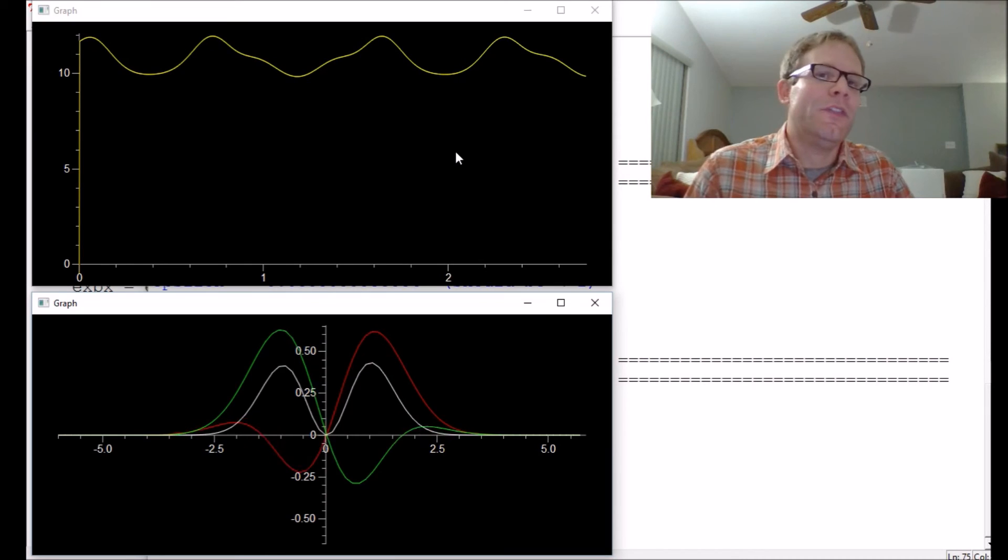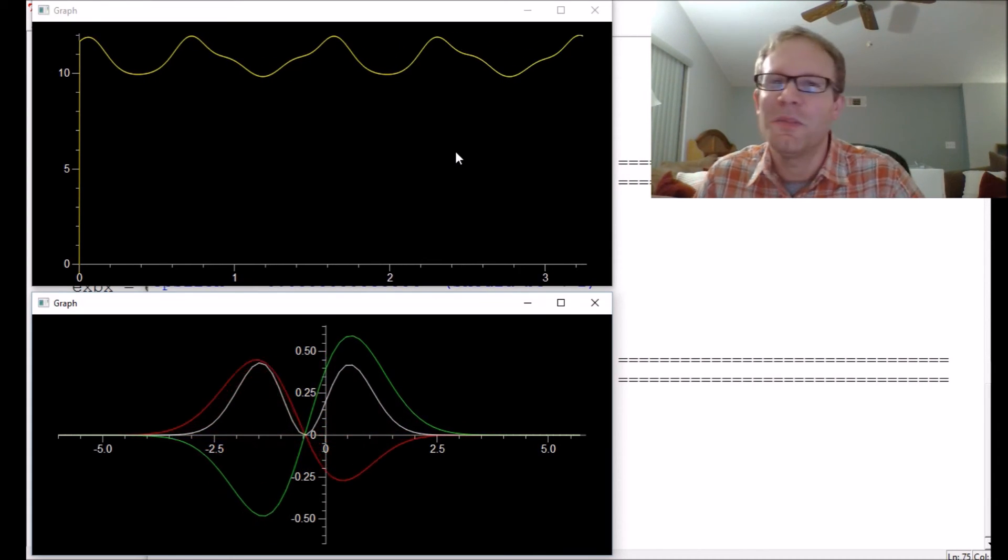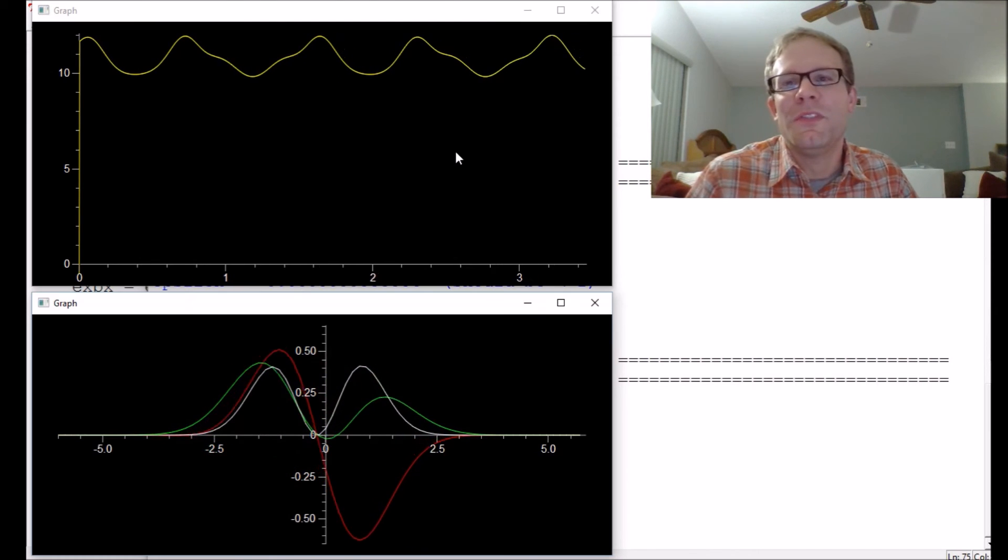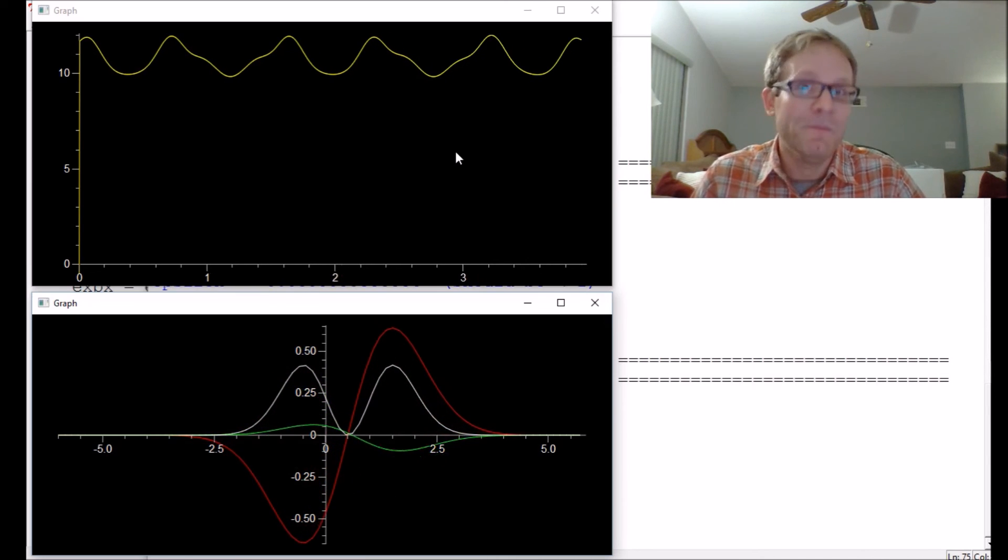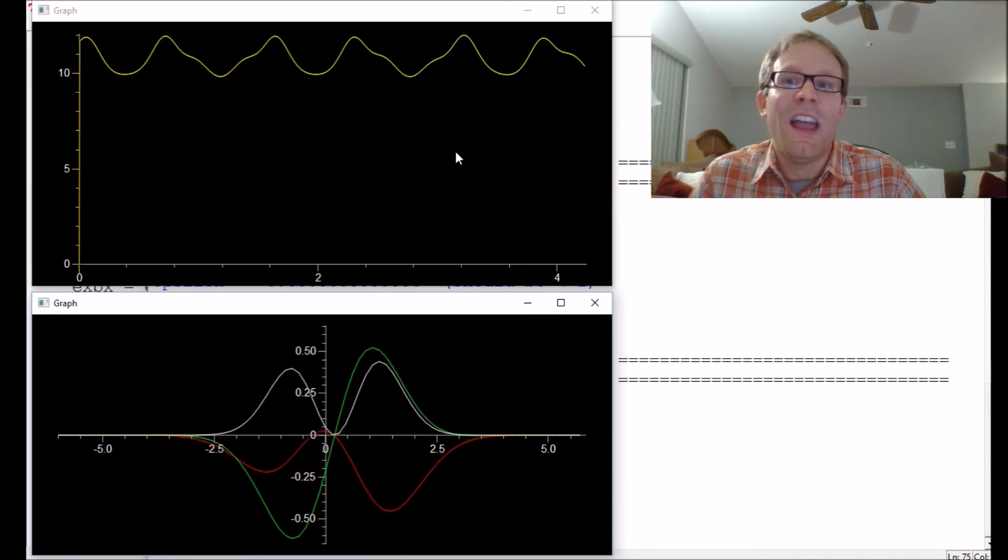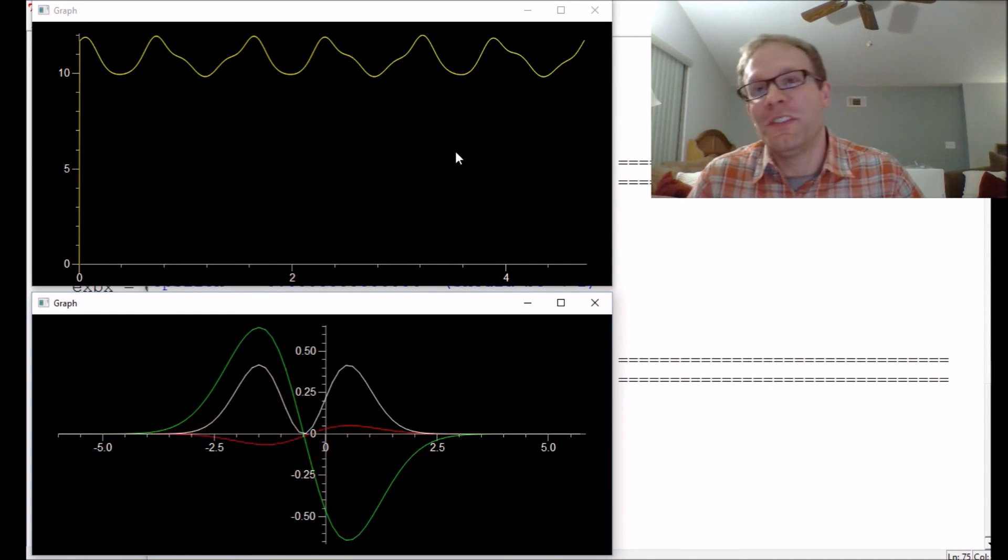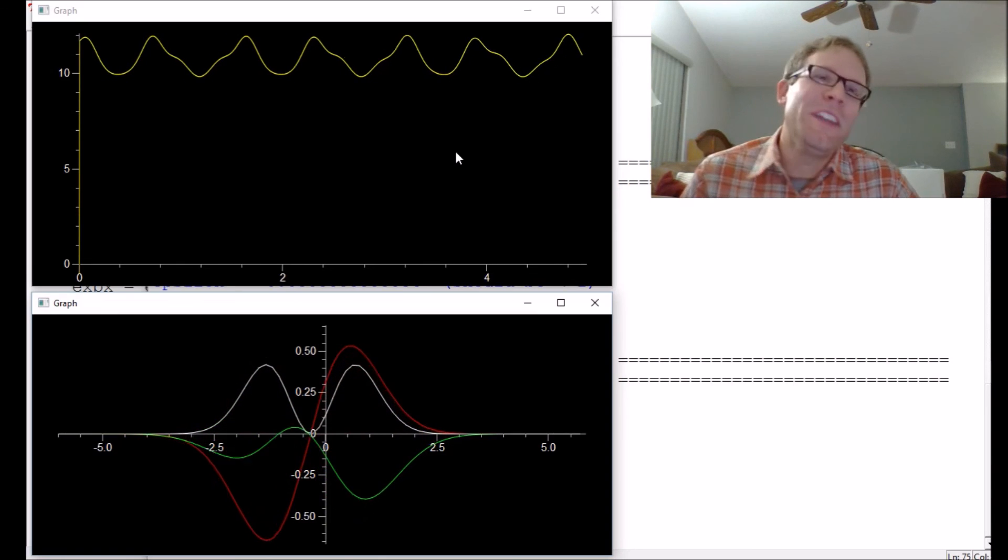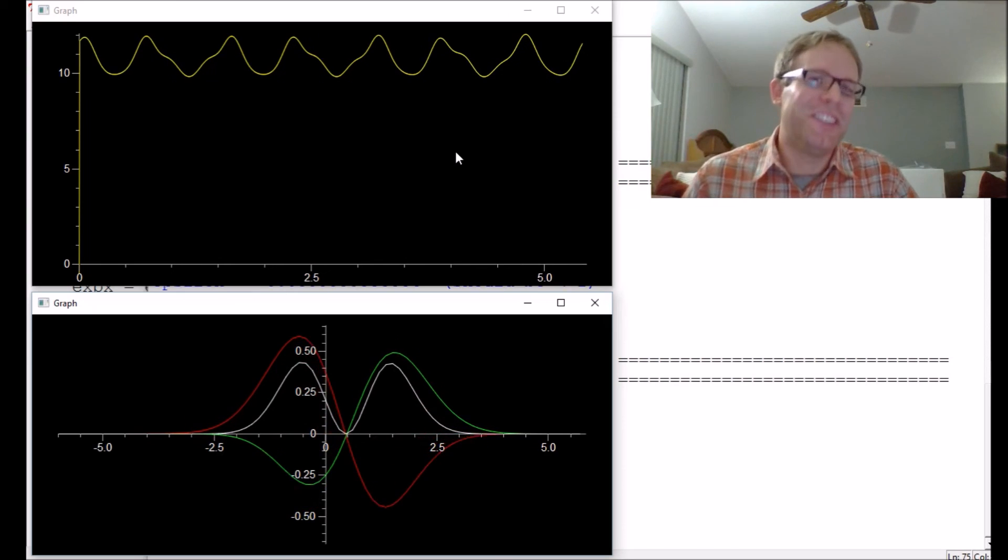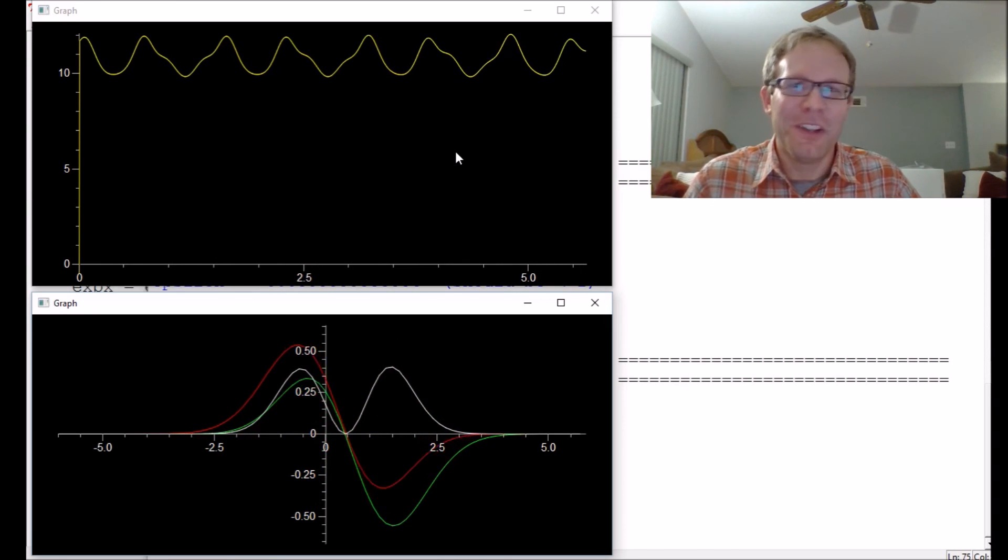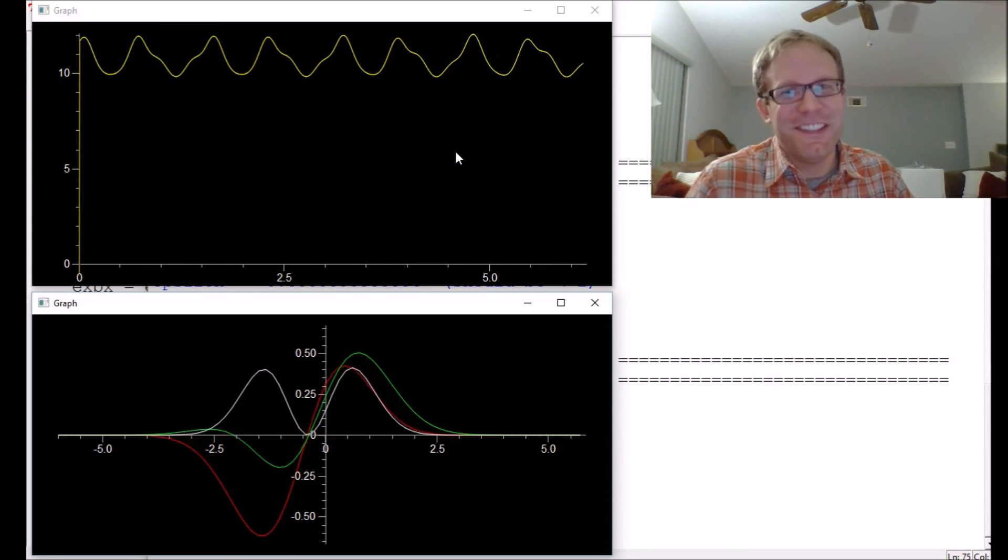What we will do in a future episode is also calculate the expectation value of the momentum and then we can do expectation value of momentum squared, and we'll be able to do the standard deviation in both and get out the Heisenberg uncertainty principle. The more I think about it, the more I think I'm going to do that next week. I'm going to delay moving on to other potential energies till we get this thing fully rocking with the Heisenberg uncertainty principle. Thank you so much for watching. I will see you next time.